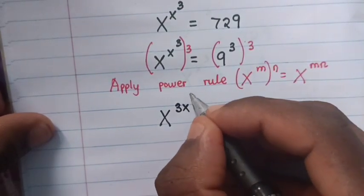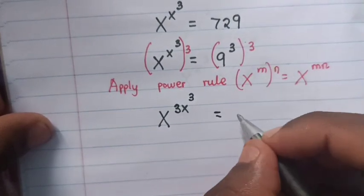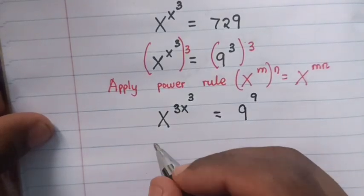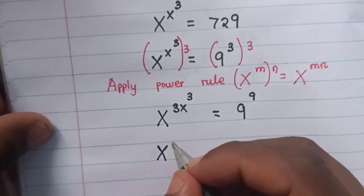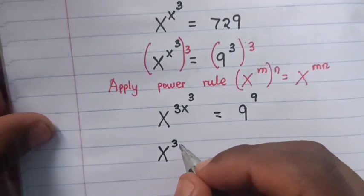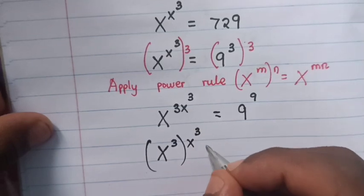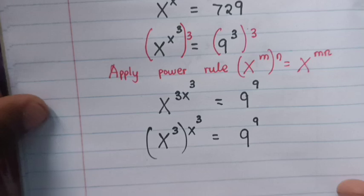So it will be x power 3x power 3 equals 9 power 9. So our equation will be x power 3 inside the bracket times x power 3 power outside the bracket which equals 9 power 9.